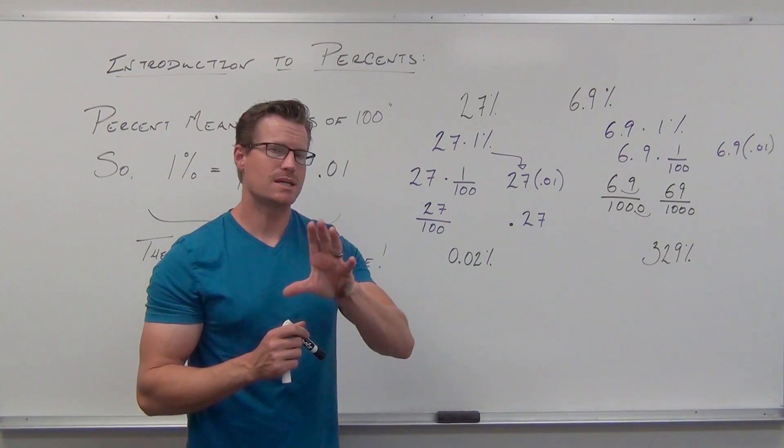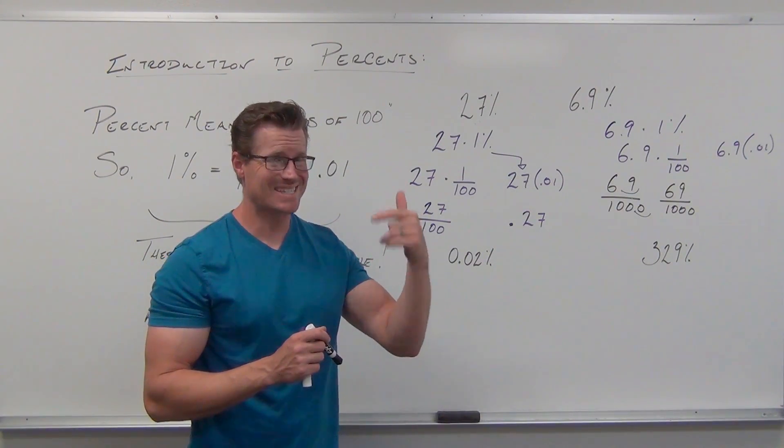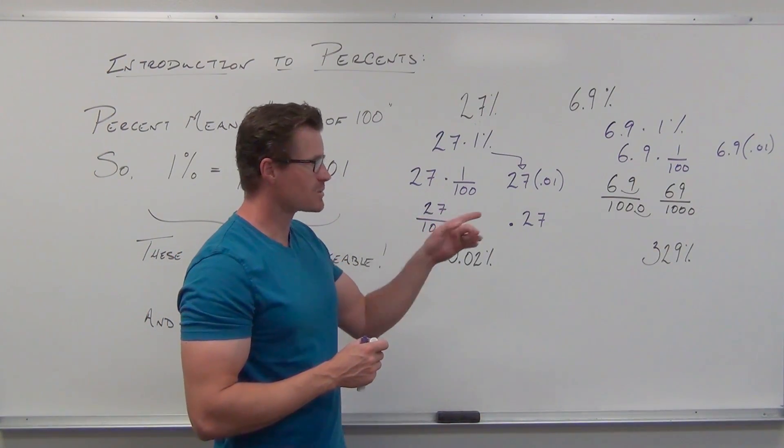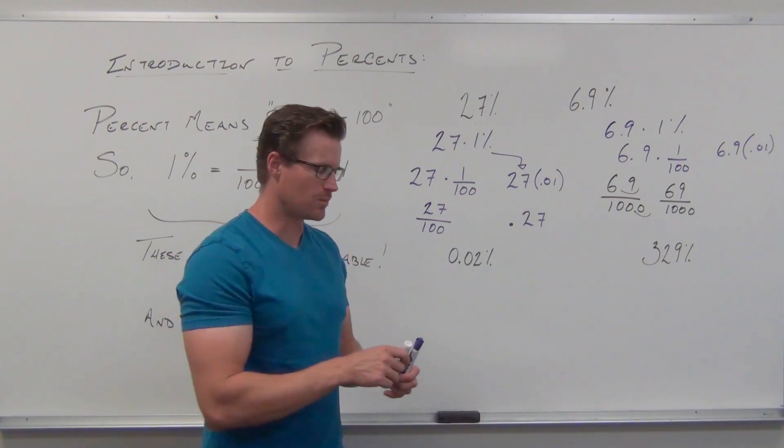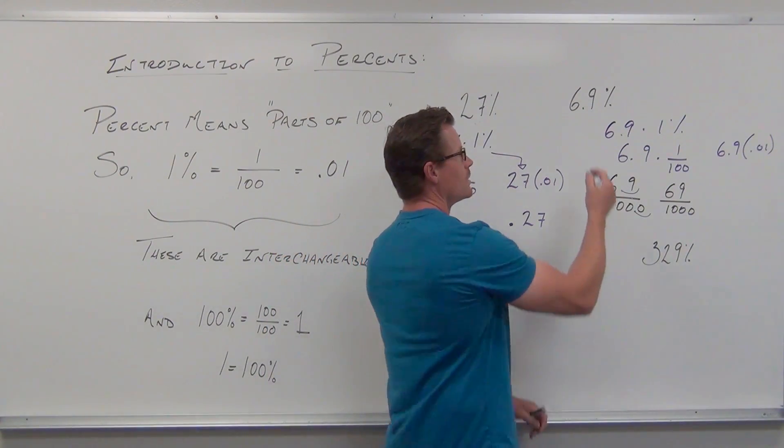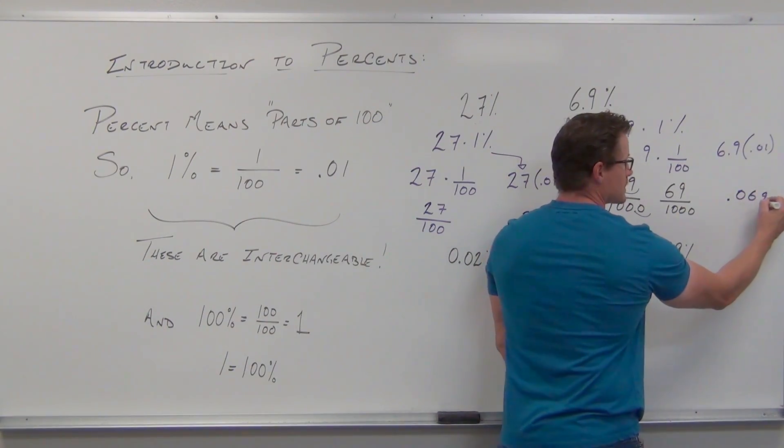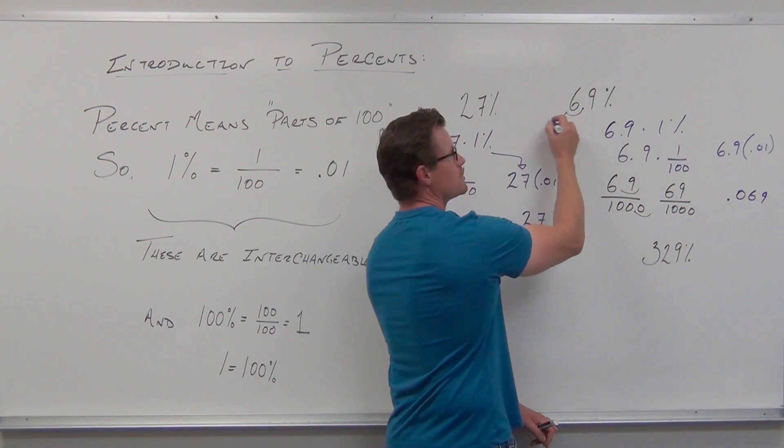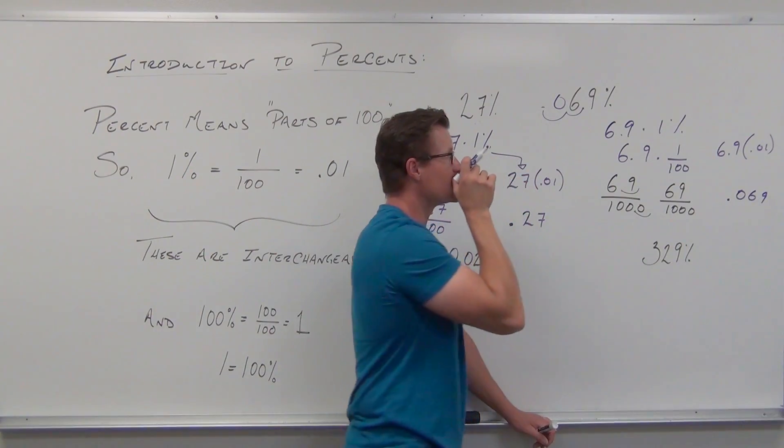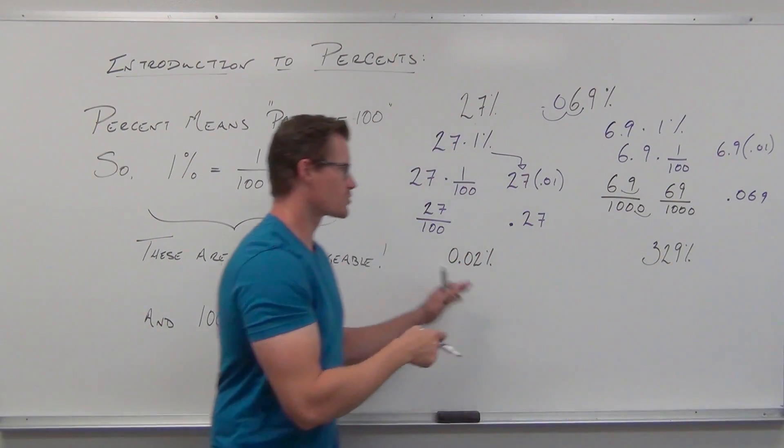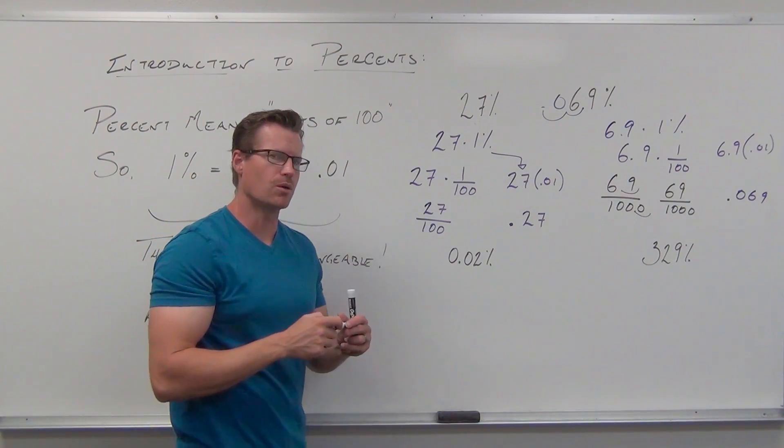For our decimal, just multiply. Use your calculator and multiply or move your decimal two spots to the left. In this case, we should get .069. One, two spots to the left gives us .069. That's how working with decimals works. Why don't you try these two? See if you can do them on your own.